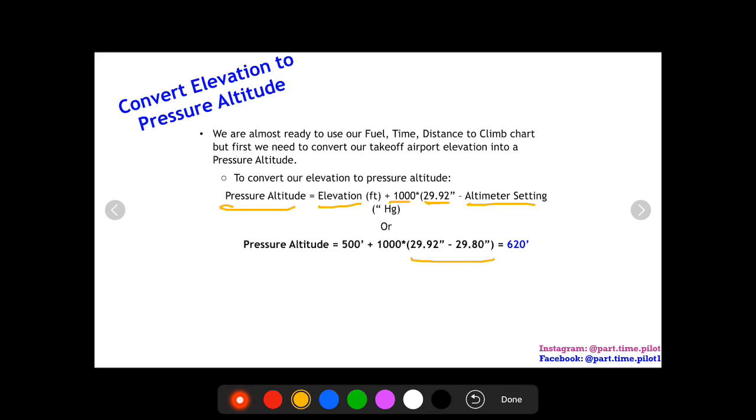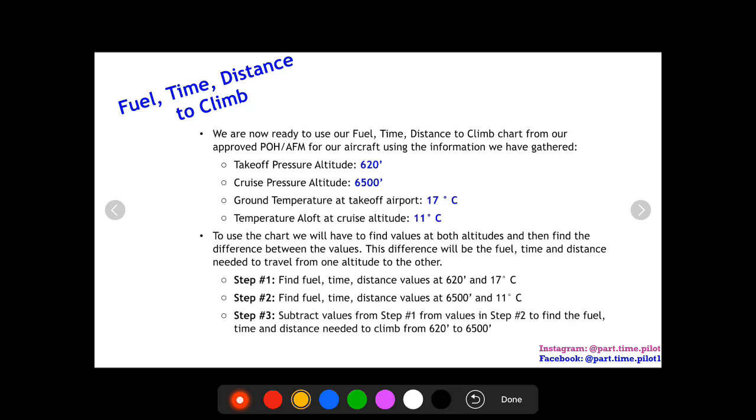If we do 29.92 minus 29.80, which was our altimeter setting, we get 0.12 times 1000 equals 120 plus 500 equals 620. So now we have our elevation in terms of pressure altitude. Now we're ready to use our fuel, time, distance to climb chart. We have everything we need: our takeoff pressure altitude, our cruise pressure altitude, our ground temperature, and our cruise temperature.